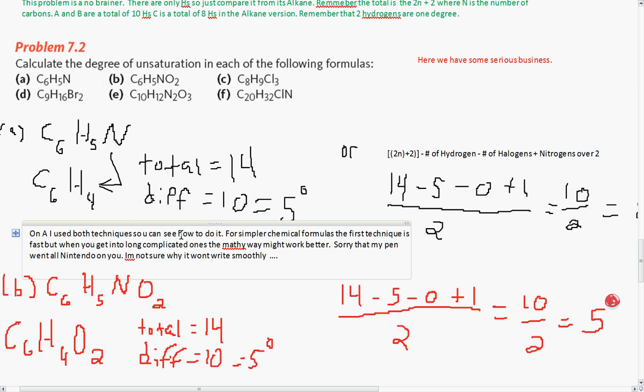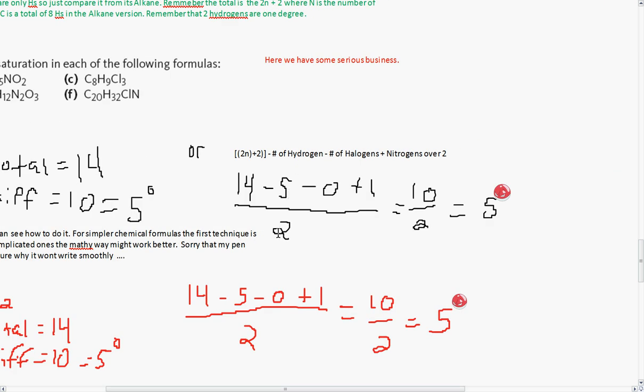Problem 7.2, and here we have some serious business. Calculate the degree of unsaturation in the following formulas. Well, in A, you can see what I did here is you cleave this nitrogen and take that hydrogen with it. I use both techniques so you can see how you do it. For simple chemical formulas, the first technique is fast, but when you get into long, complicated ones, the mathy way might work better. So there's how to do it. When you cleave that nitrogen, take the hydrogen with it, that gives you the C6H4, compare it to its alkane, get a difference of 10, which is 5 degrees. Or you can just plug it into the formula, which I typed out here, because my pen was all weird when I got down here. 14 minus 5 minus 0 plus 1, zero because you don't have any halogens in this formula, then divide it by 2, and that gives you 5 degrees of unsaturation.